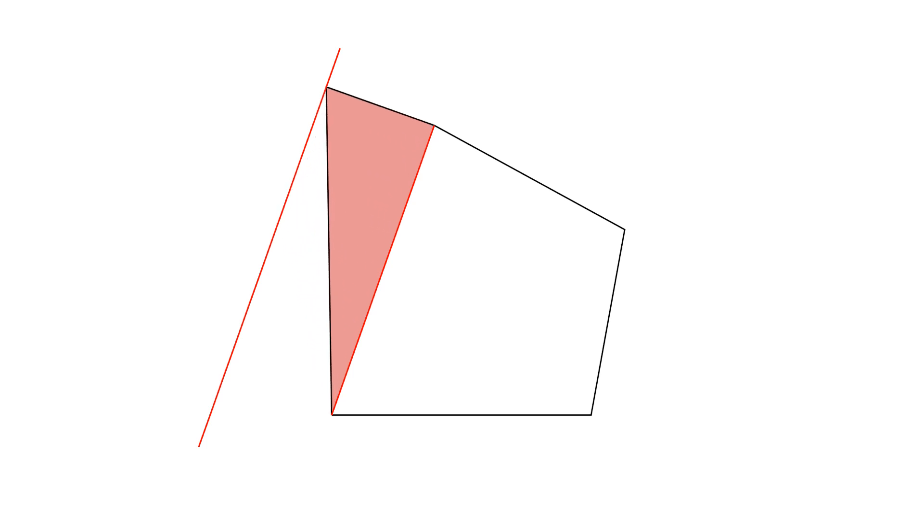Thus, if we move the vertex anywhere on this line, our triangle will retain its area, since its base and height will remain unchanged.